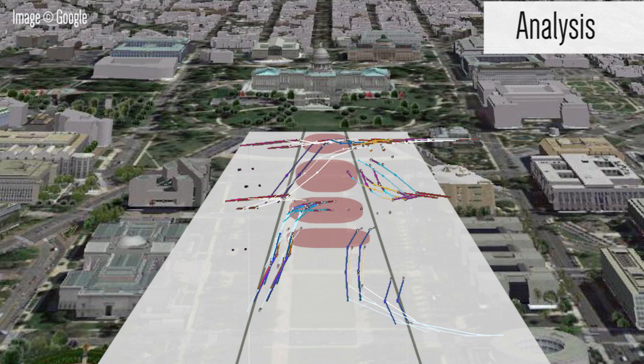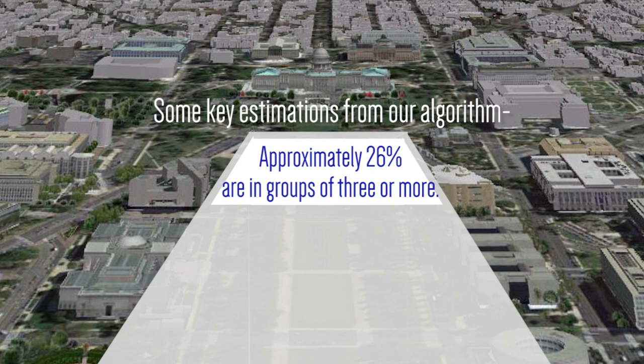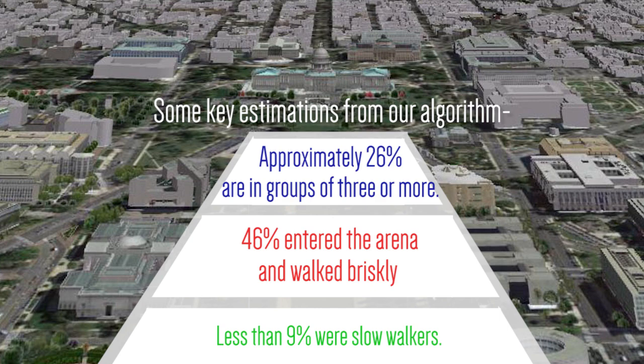Using machine learning algorithms, we're able to dig deeper than just counting the number of people in a crowd. The program allows us to understand the mood and behavior of a crowd.